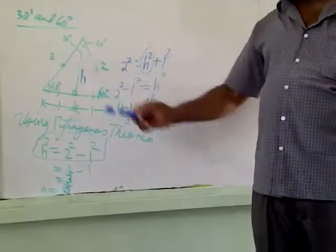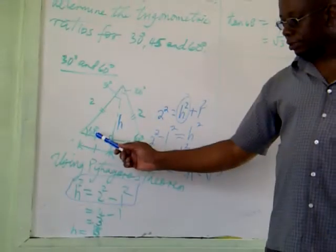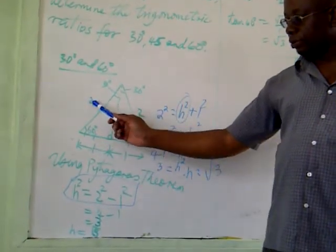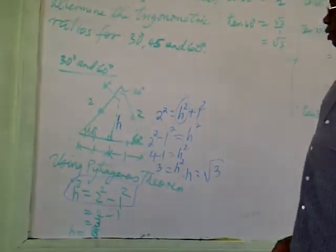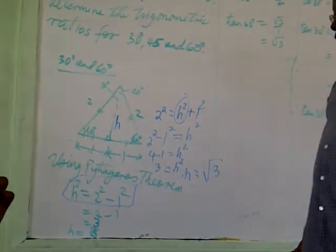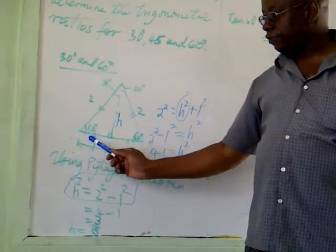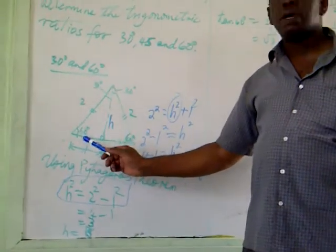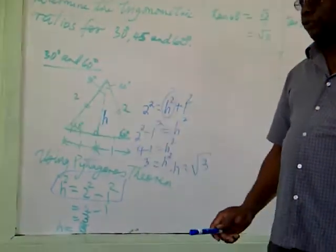The sine of 60 is opposite upon hypotenuse. The cosine of 60 is adjacent upon hypotenuse, so that's 1 upon 2. And the tan of 60 is opposite upon adjacent, so that's root 3 upon 1, which is root 3.